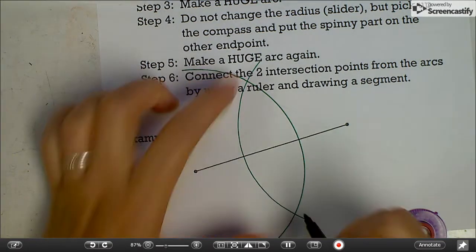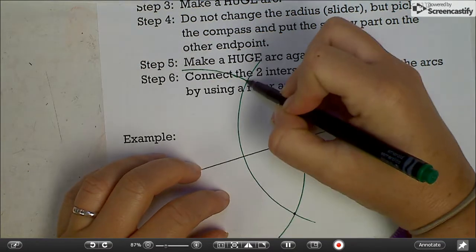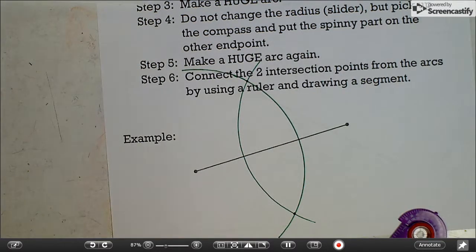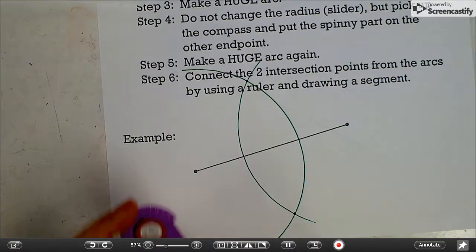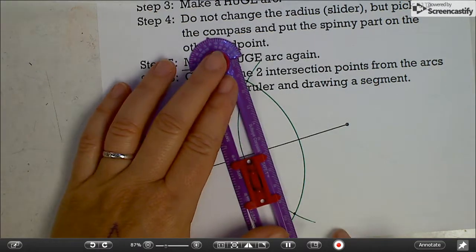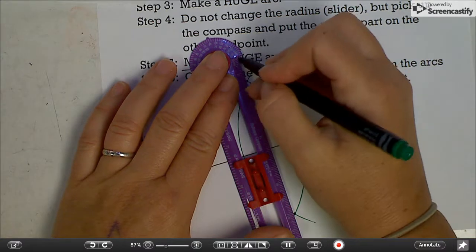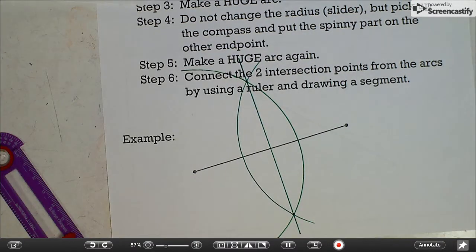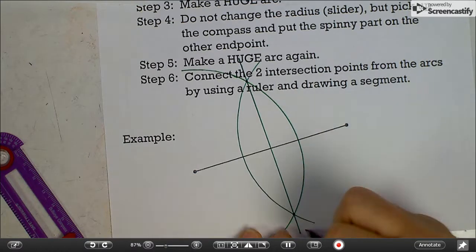Where the arcs intersect creates points. You don't have to put the points there, but if it helps you, go ahead. And then to make the perpendicular bisector, you're going to line up your ruler part of your compass and draw a line. This line right here is the perpendicular bisector.